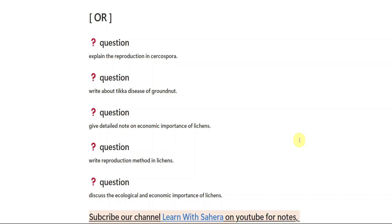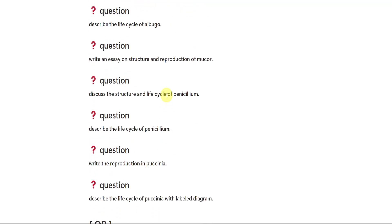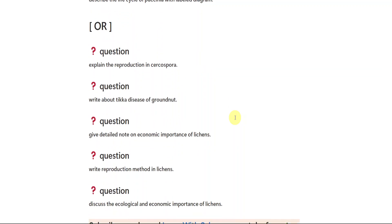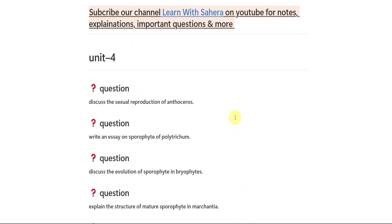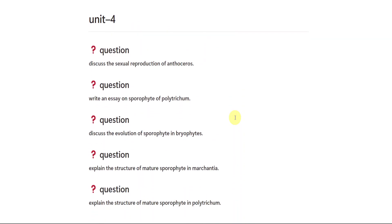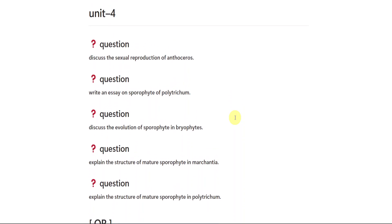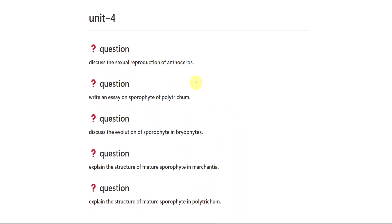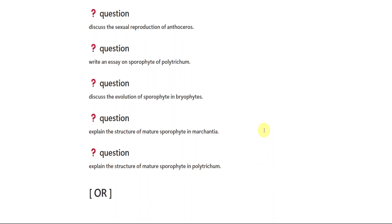Students, no need to read all the questions. As I already said, choose any one set. Definitely, if you are choosing this set, one question you will be seeing in the examination. If you are choosing the above set, definitely one question will be there in the examination — no doubt. Now, talking about the last unit, unit number four — here are five damn sure questions in set one which I have given you. Please make a note of it.